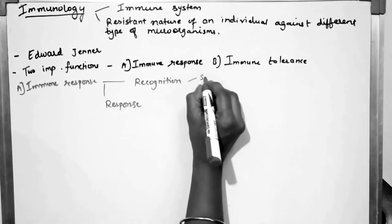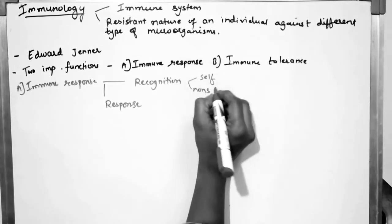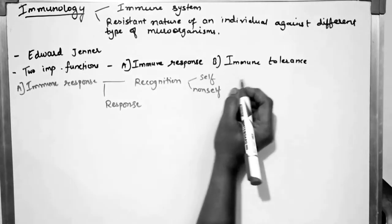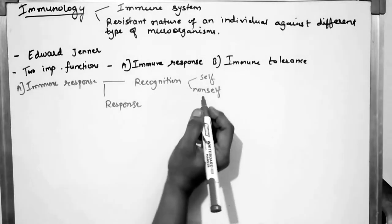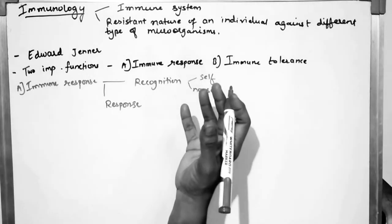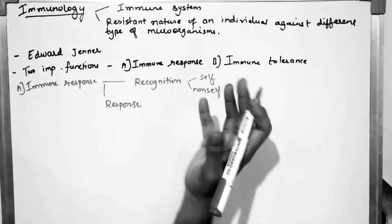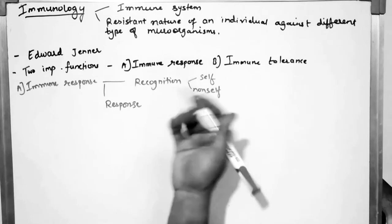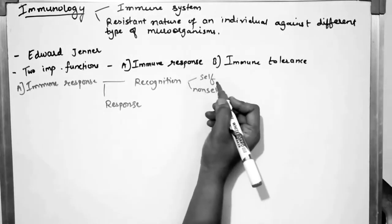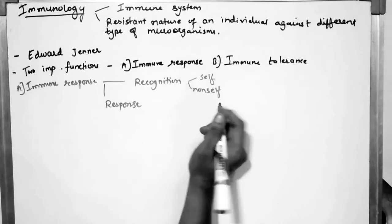Recognition means the immune system will identify it as a self or non-self. If our body identifies it as a foreign particle, then it will respond against that microorganism. If it is a self-cell — our body's own cell — then it will not respond.